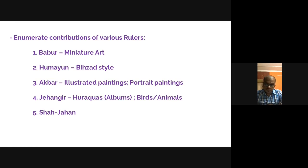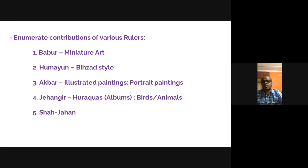You can speak about illustrated paintings and portrait paintings, and this is where the beginning of European influence comes into the paintings. Portrait paintings — like the Mona Lisa — are quite famous in Europe and that influence was borrowed here. That's the first period where European influence into paintings comes in. Jahangir is well known as the prince of paintings; he started albums and is famous for paintings of birds and animals.